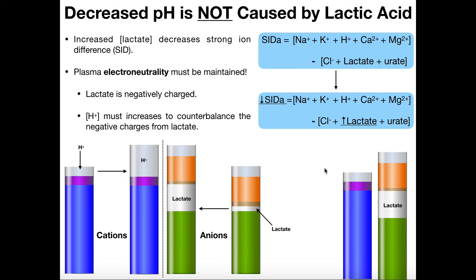So what has to happen is that in order to maintain plasma electroneutrality, there has to be an increase in the amount of cations. Is there any easy way without consuming anything from the diet to get extra sodium, potassium, calcium, or magnesium? Not really — there's movement of those ions across membranes, but not really a way to significantly change the amount of cations in the blood. But hydrogen ions are relatively easy to add to the blood, because everything has a certain amount of hydrogen ions on it, so just dissociate some of those and they go into the blood. So in order to maintain electroneutrality with this increased amount of lactate, the amount of hydrogen ions increases.